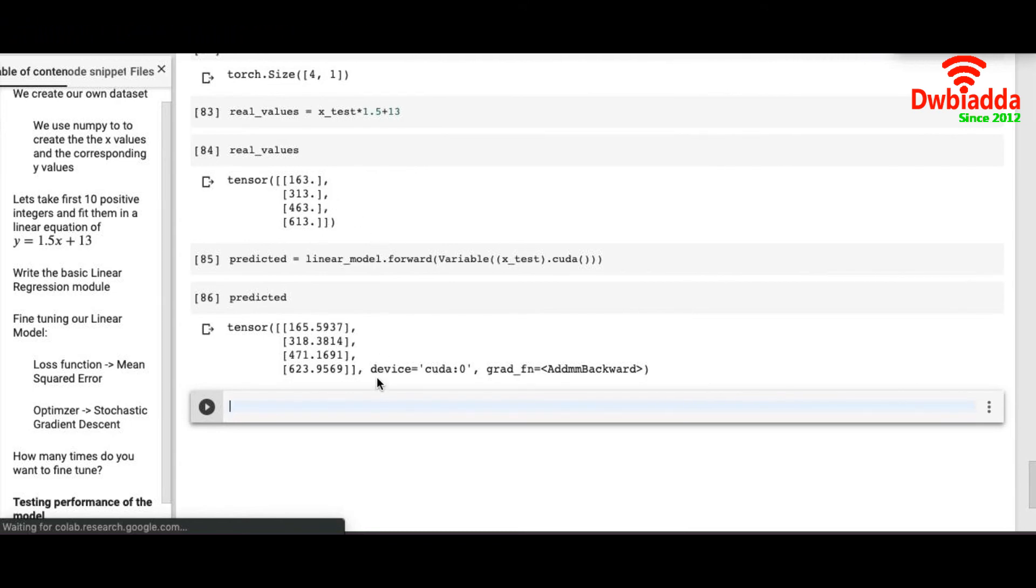Now if you want it to be perfectly matching with the actual values you have to run more epochs. So if you are not satisfied with this result try running 2000 epochs. If that is not good enough for you try running 3000 epochs. So this way you keep on increasing the number of epochs and your model fits better than the lesser number of epochs.